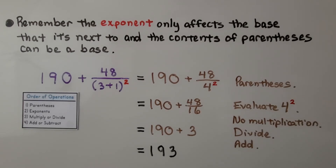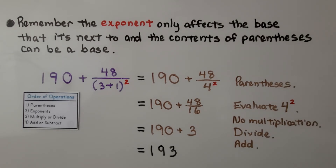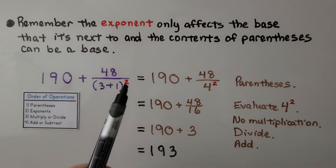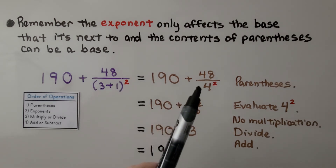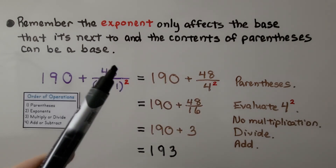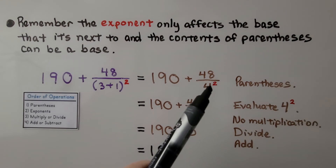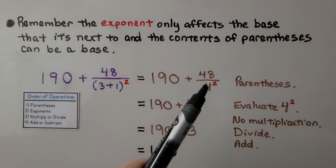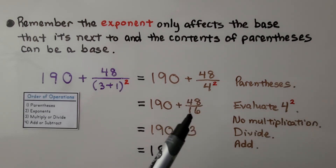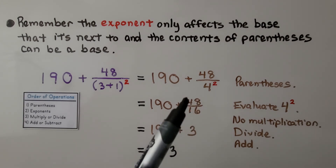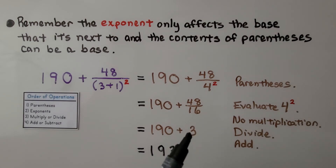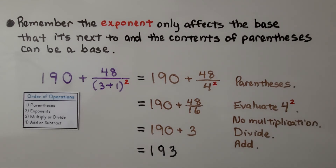Remember, the exponent only affects the base it's next to, and the contents of parentheses can be a base. Here we have (3 plus 1) raised to the second power. We do the parentheses first: 3 plus 1 is 4, giving us 4 raised to the second power. We have 48 over 4 raised to the second power. The exponent gives us 4 times 4 equals 16, so we have 48 sixteenths. 48 divided by 16 is 3. Then we add: 190 plus 3 equals 193.